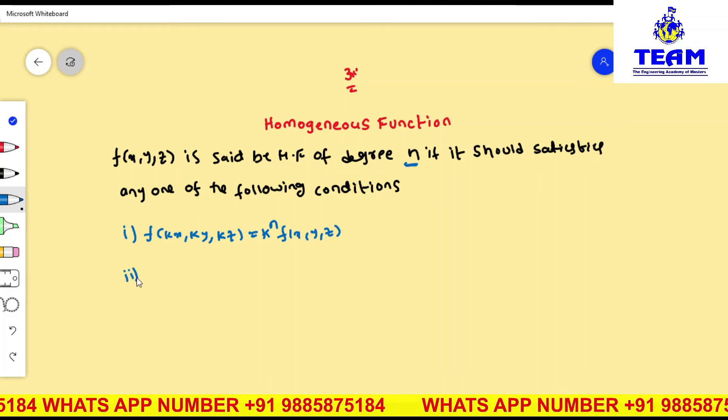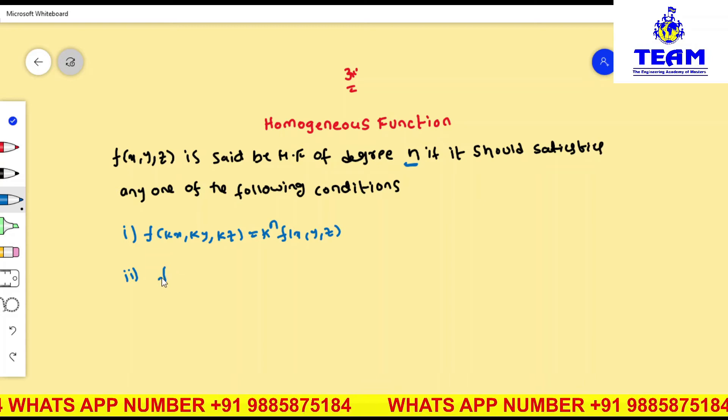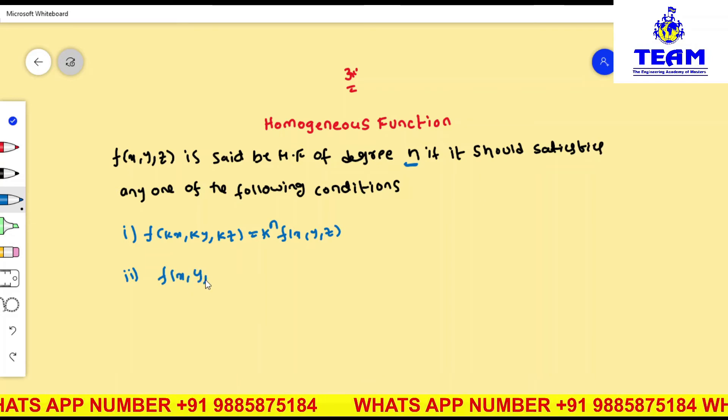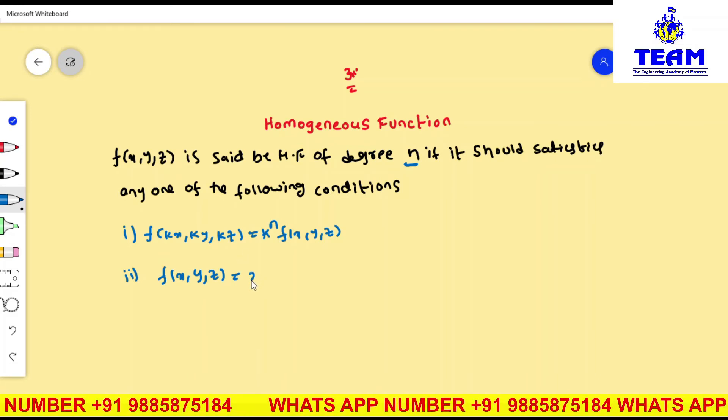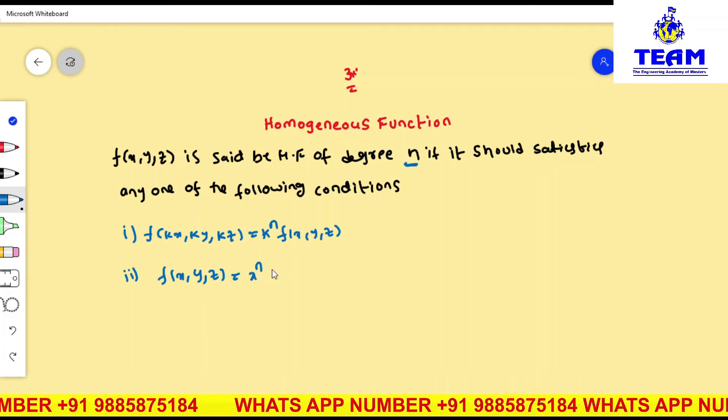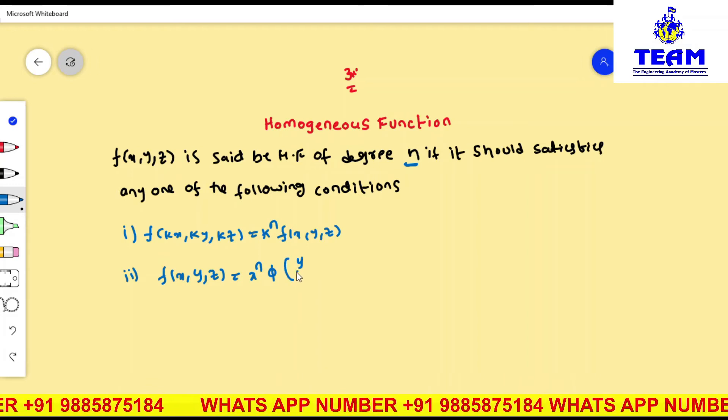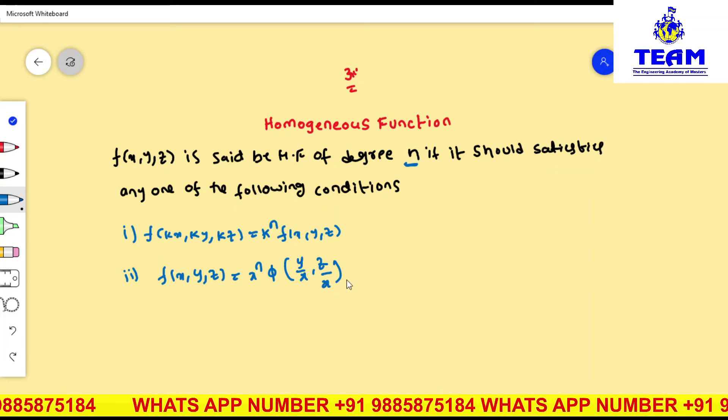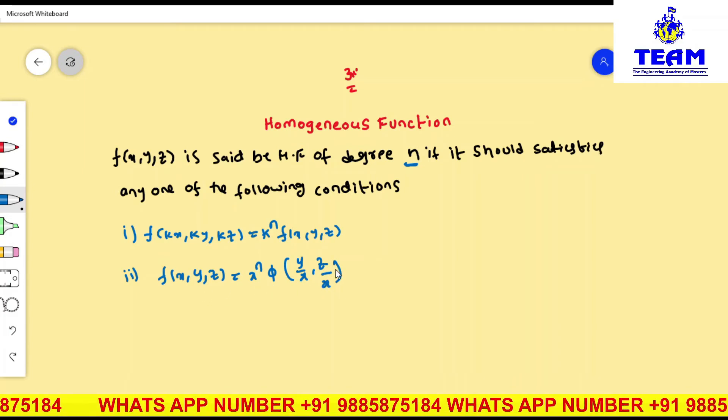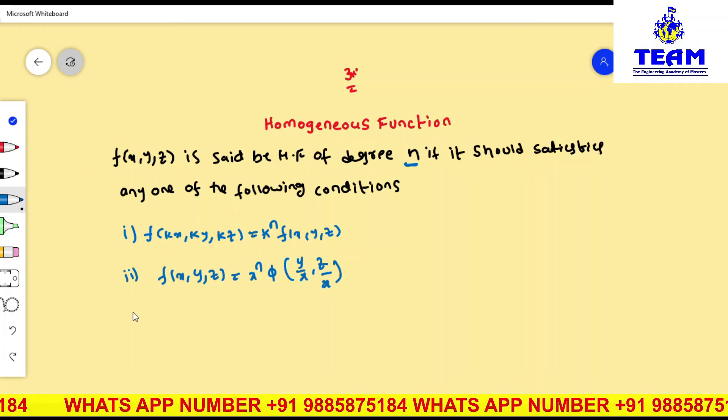Second form: if given function f(x, y, z) is said to be homogeneous function, you can also express in terms of x to the power of n into phi of y by x, z by x. In this case also you can say homogeneous function of degree n in three independent variables.